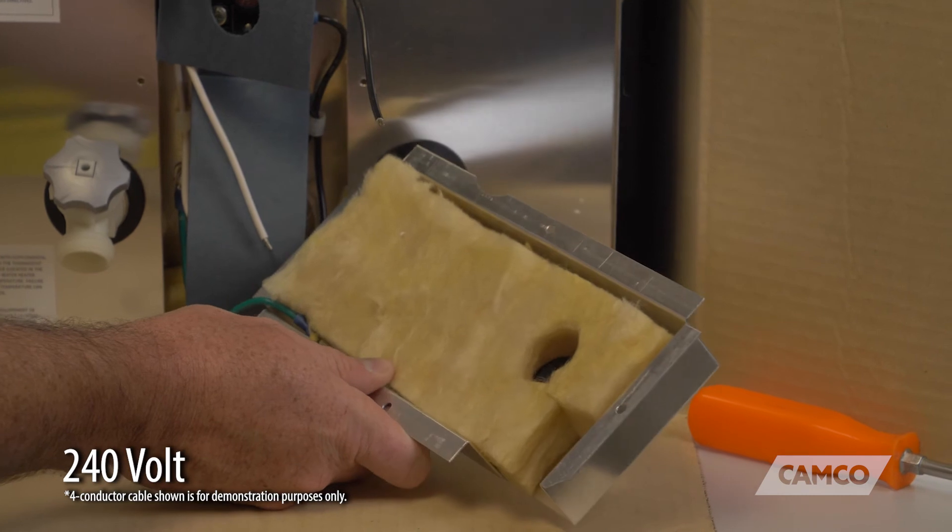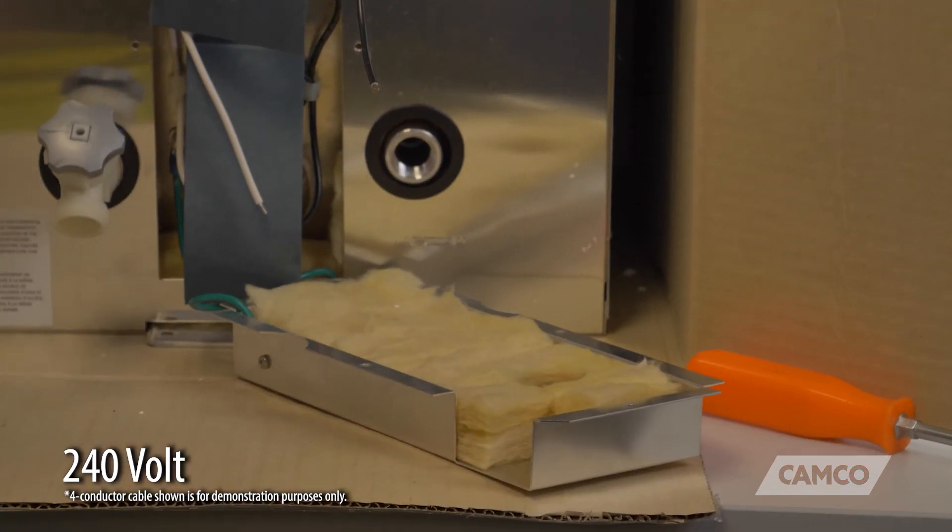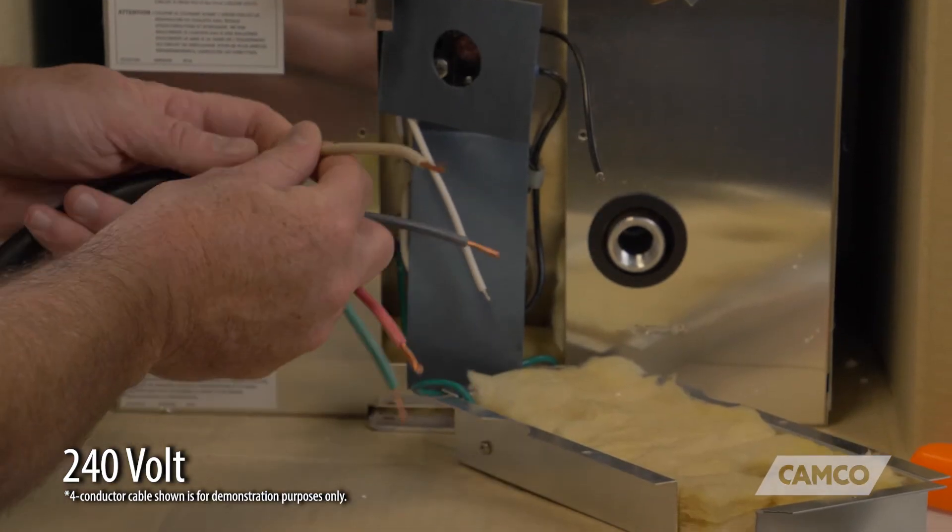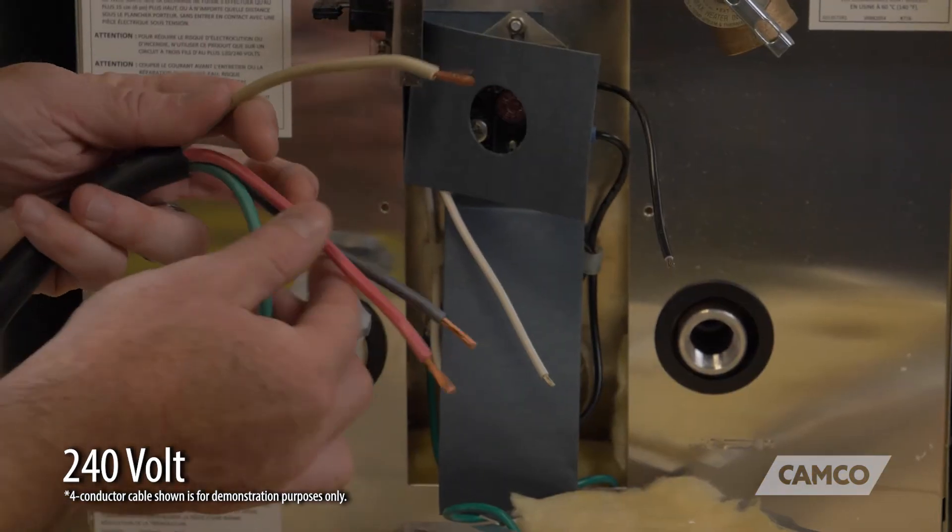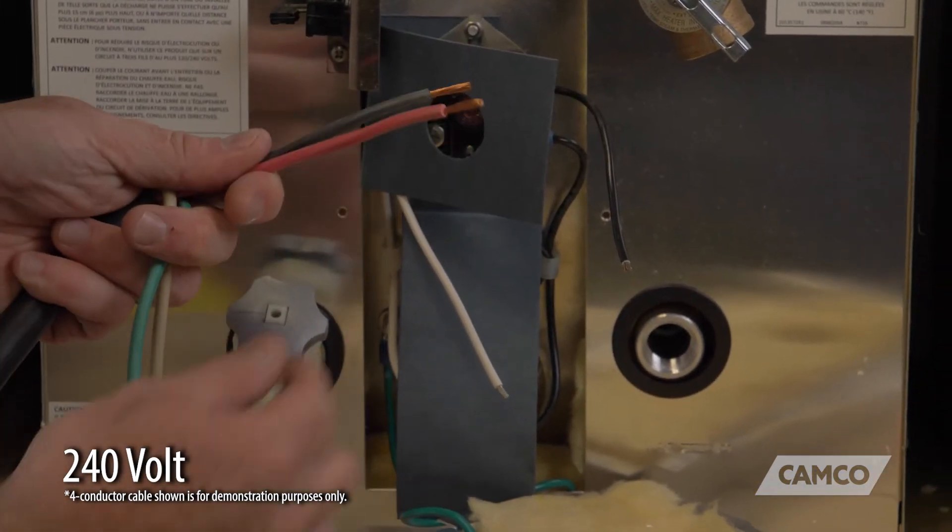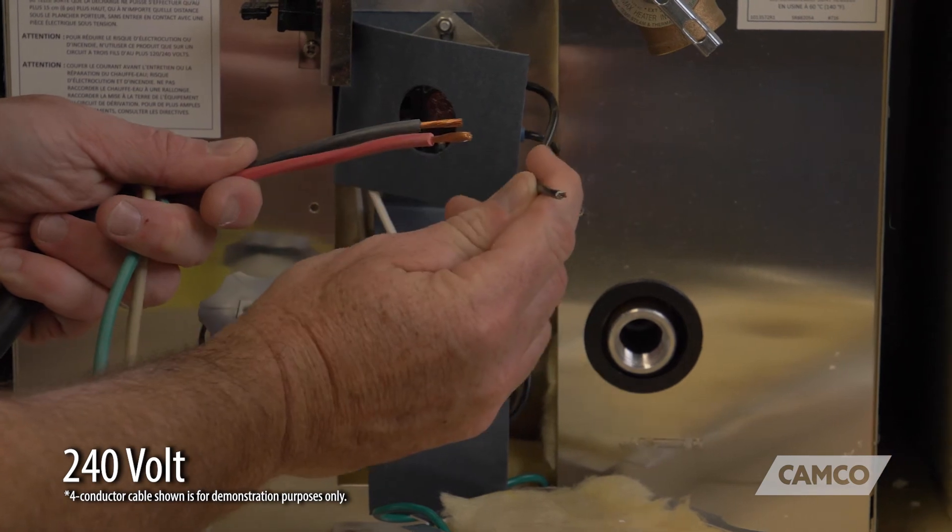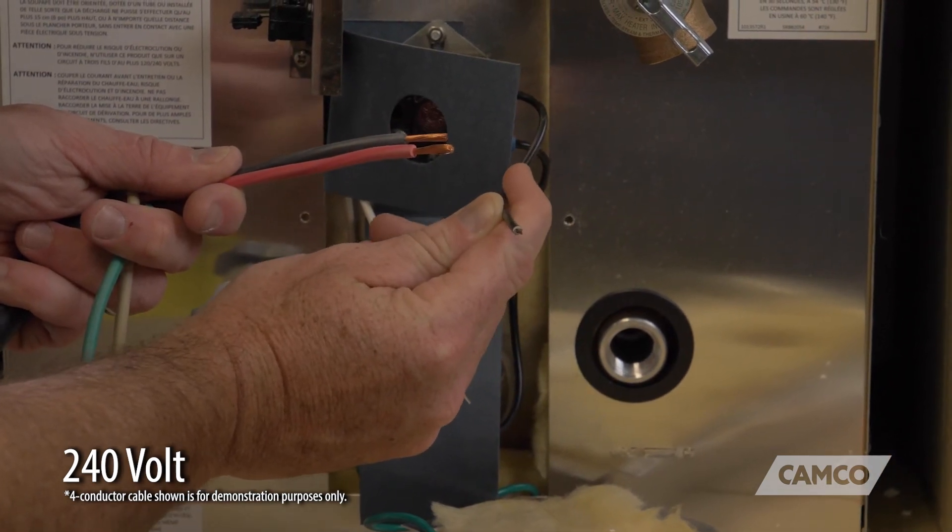We're going to connect our white to the loose white wire, and we're going to connect the black and red hot wires to the black hot wire coming off of the water heater.